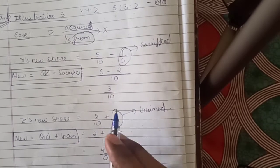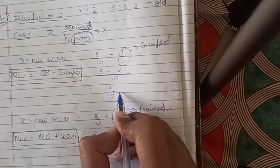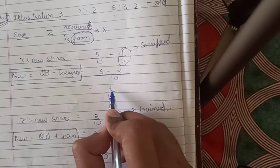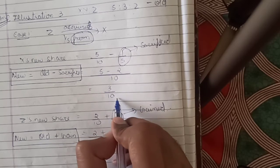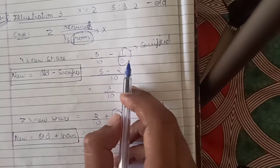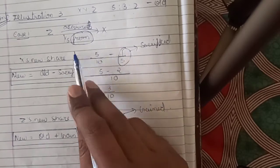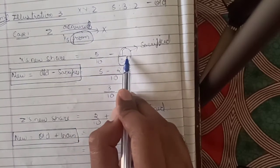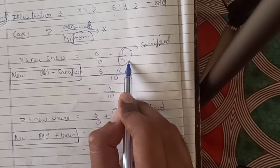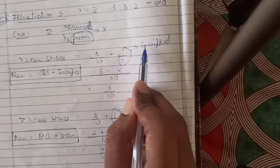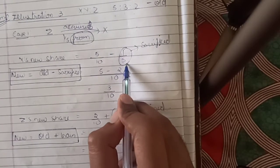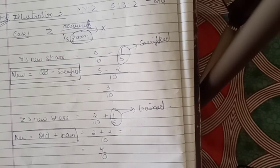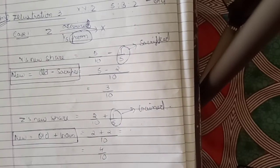So X's new share is 3/10. X's sacrifice is 1/5. X's new share is 3/10.